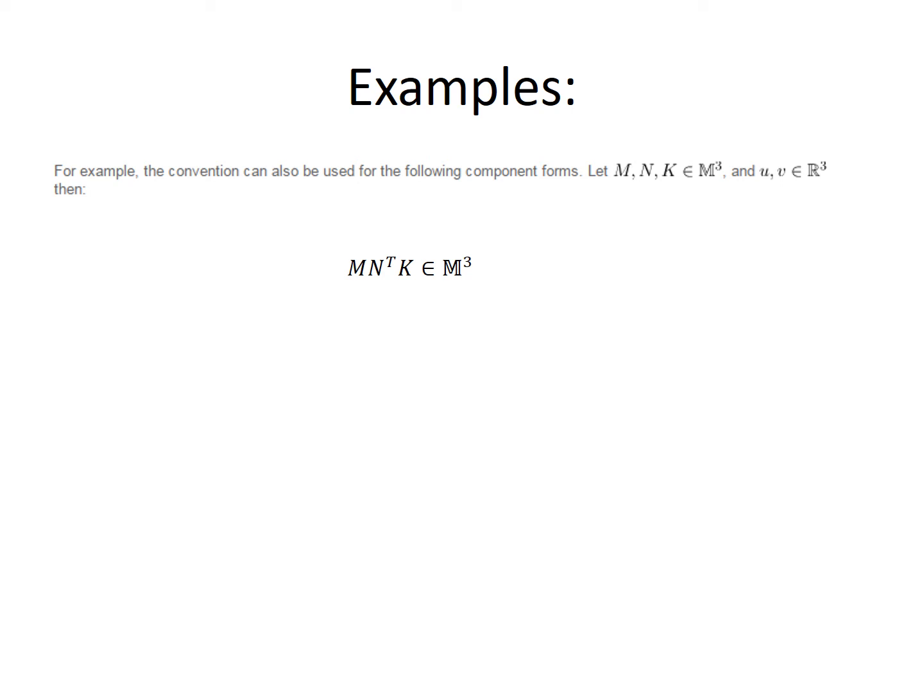Here we repeat the previous example, but we use N transpose instead of N. M N transpose K is a matrix that has components ij. We're going to repeat exactly what we did in the previous example, but the difference is because the transpose of N is N after switching its subscripts. And so you'll find that the only difference between this example and the previous example is that we're switching the subscripts of N.